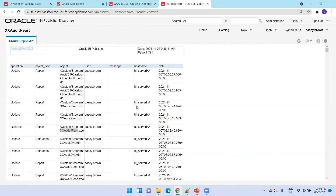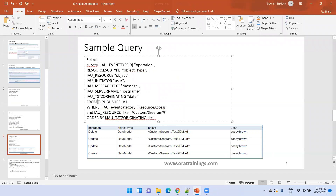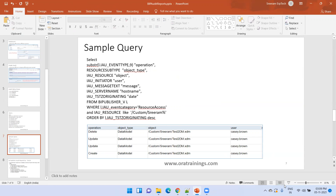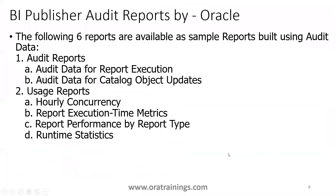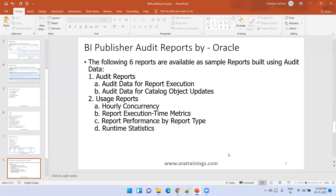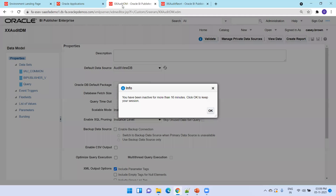Everything revolves around this particular table — all information about your auditing will be available in this table. Now, there are a total of six reports provided by Oracle for auditing purposes. We can either design custom reports using the bi_publisher_V view, or we can just refer to these standard reports, which already have a pre-built data model as well as report templates — we can simply use them.